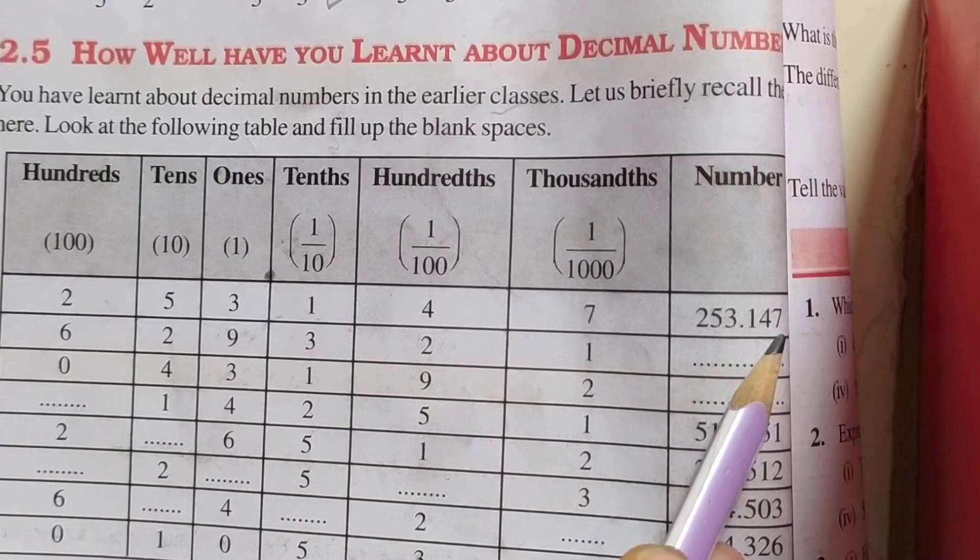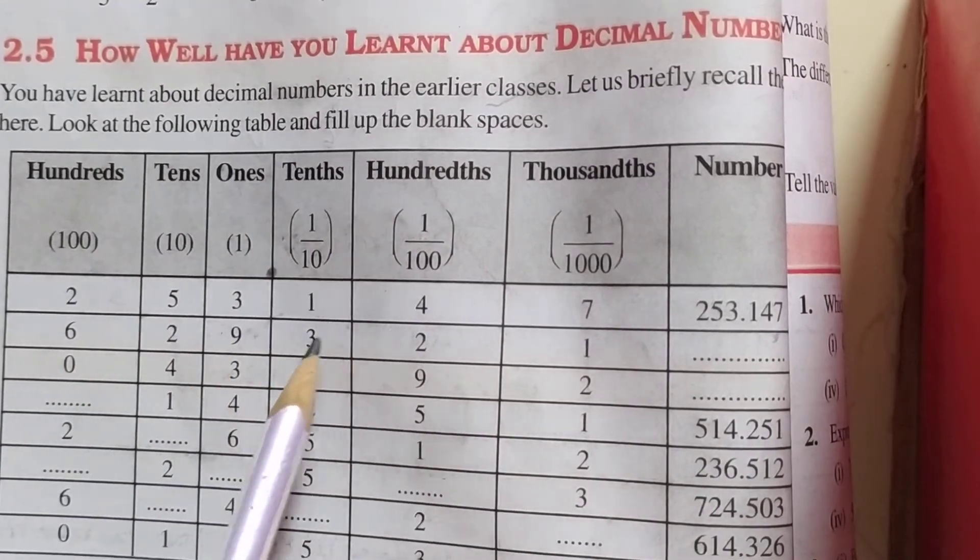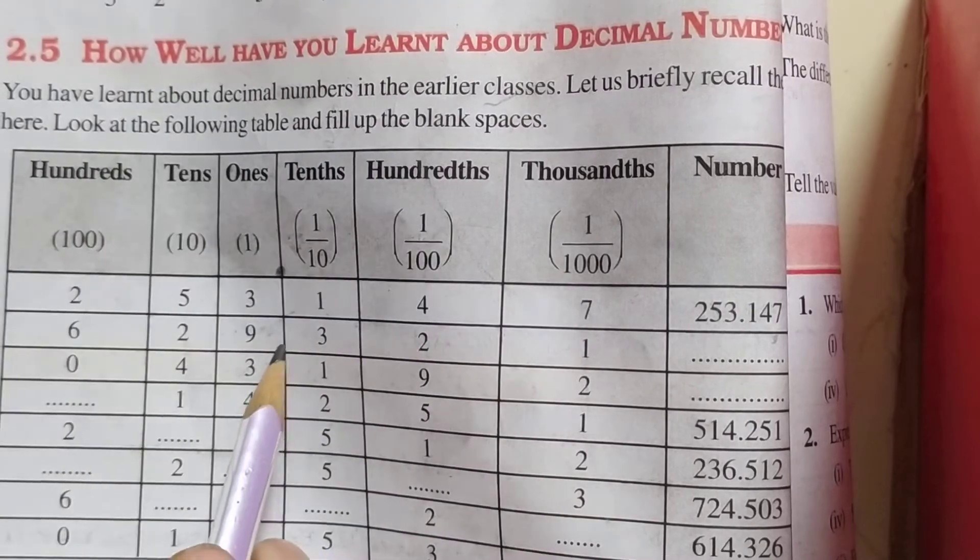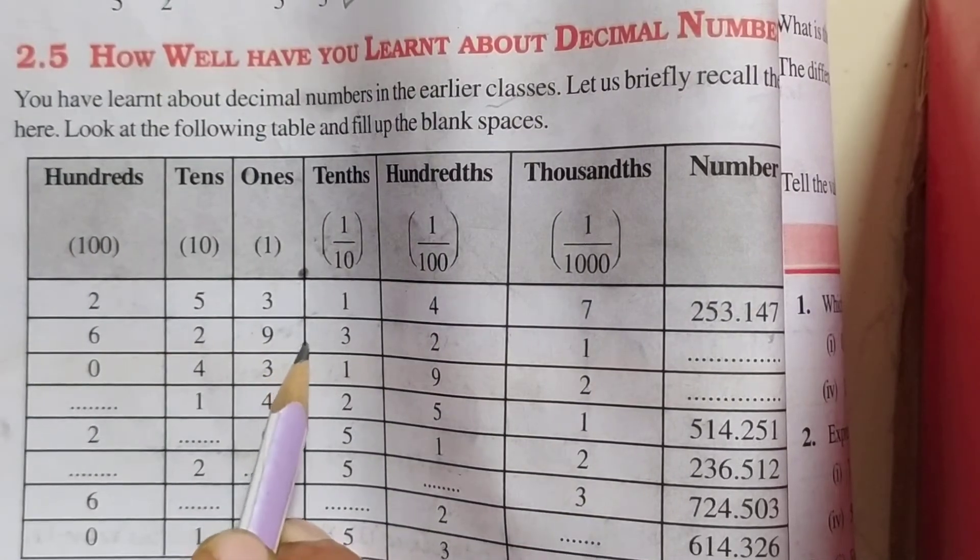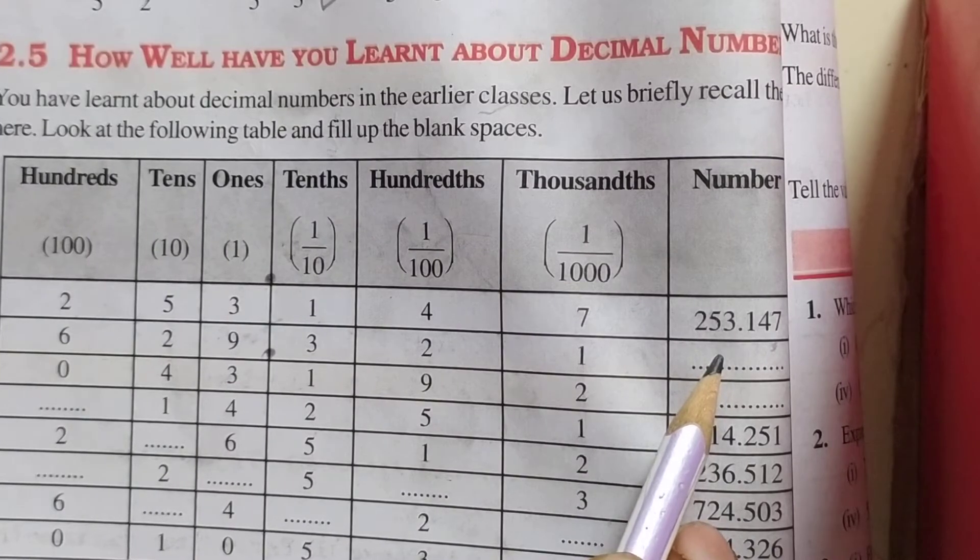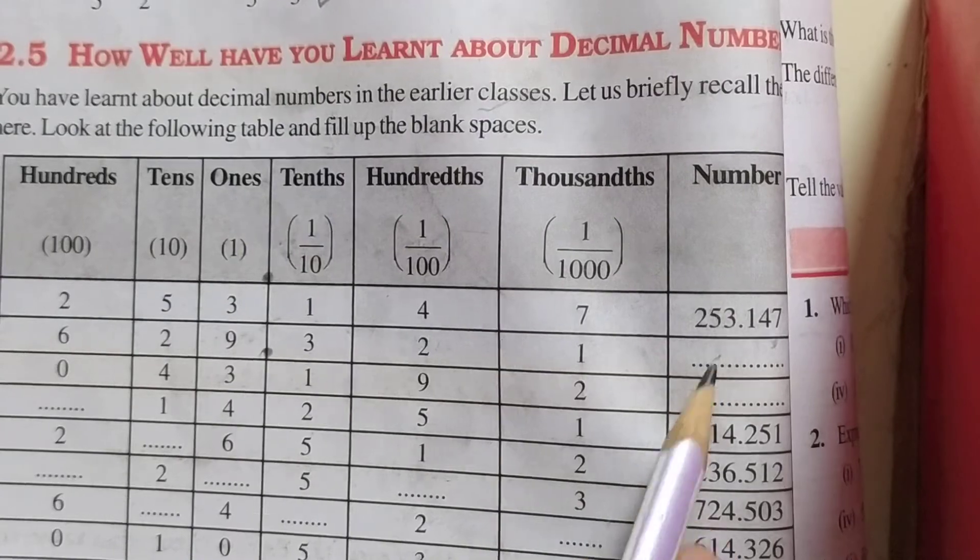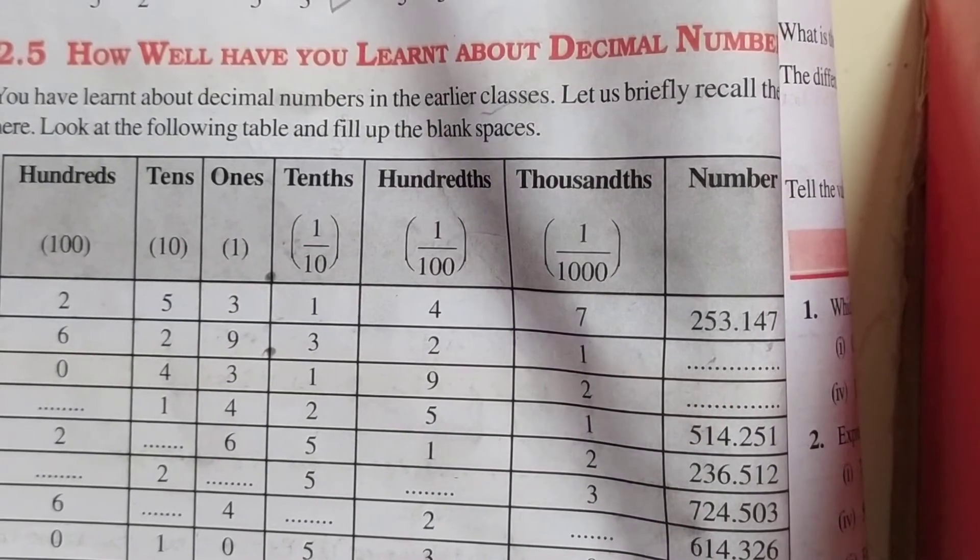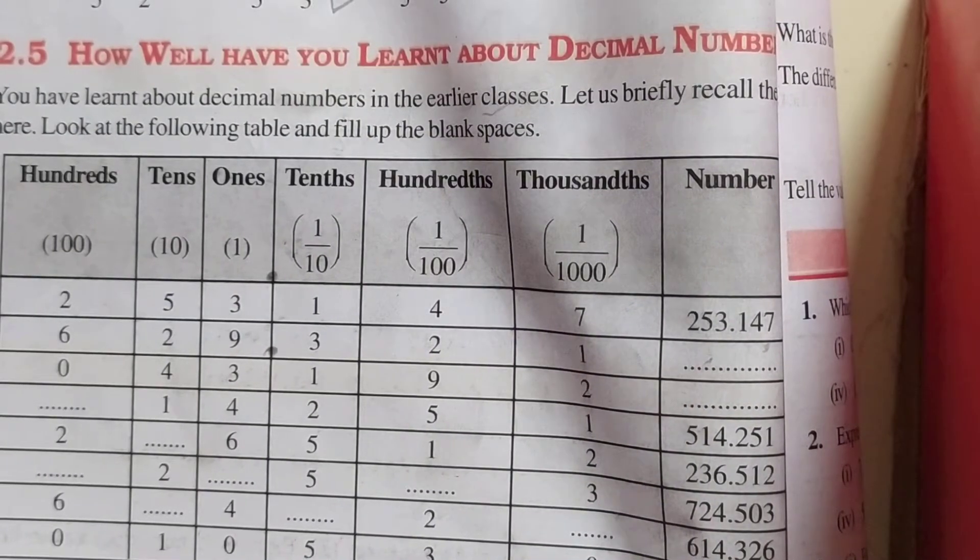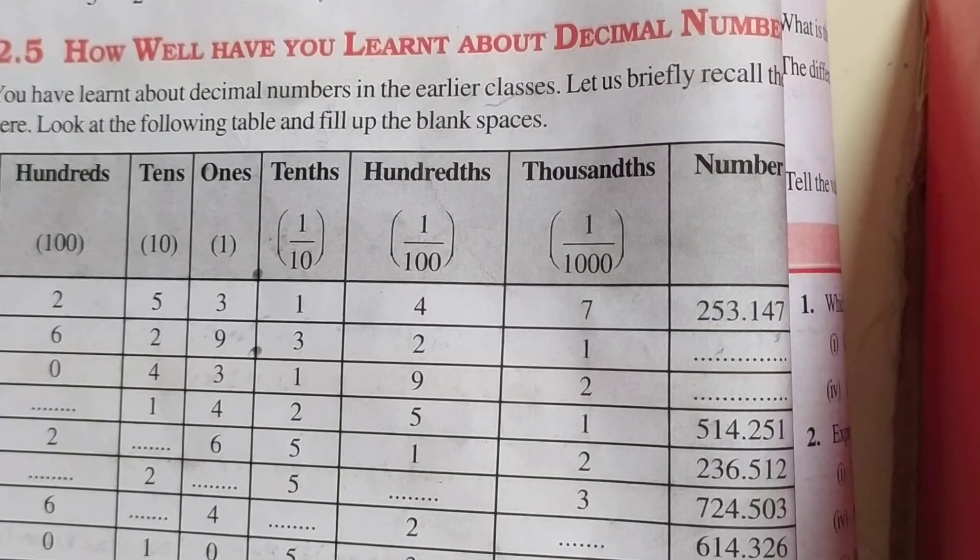253.147. Now, 6, 2, 9, 3, 2, 1. Obviously, the point will be here. So what will the answer? You have to fill up here. Answer, 629.321. So students, in this way, you have to complete this table in your textbook only. No need to solve this in notebook.